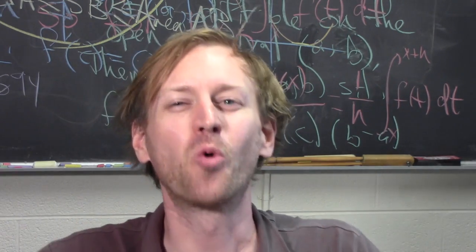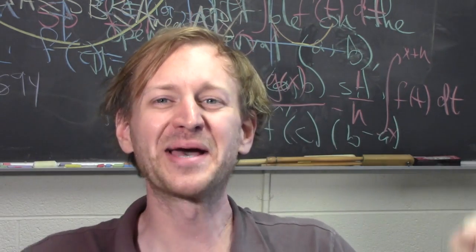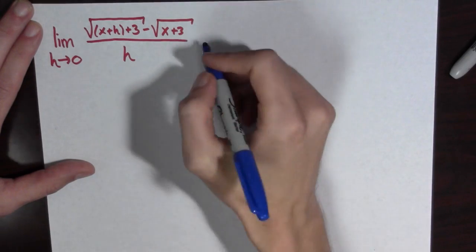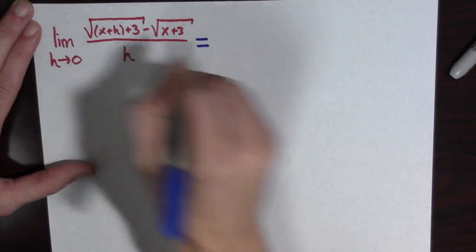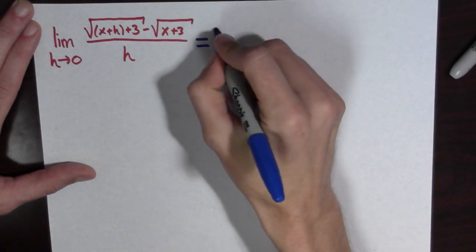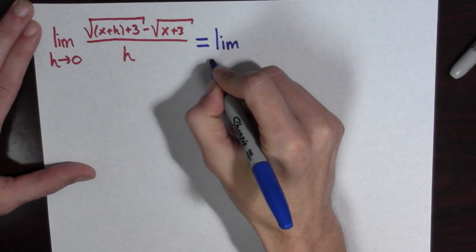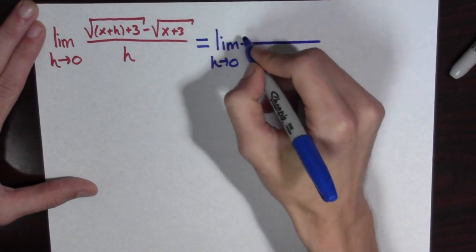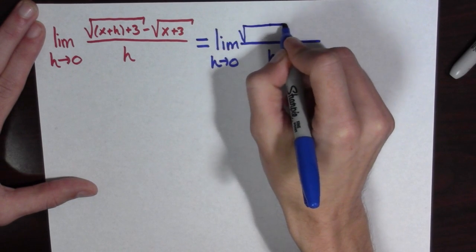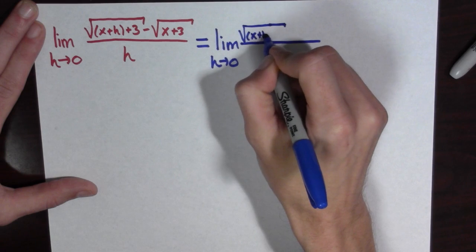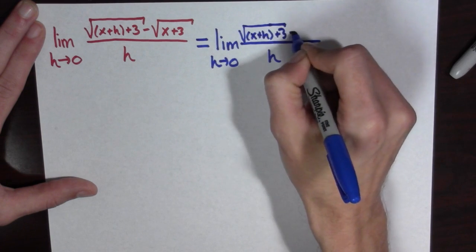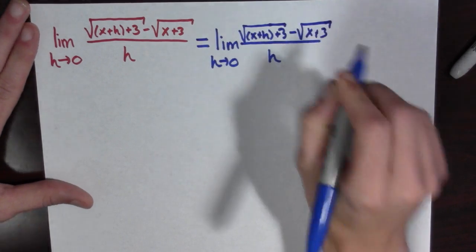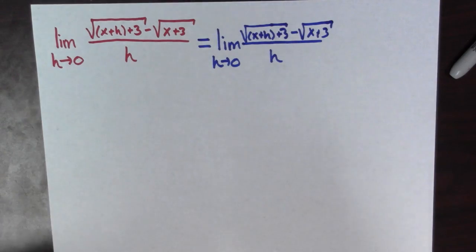At this point, we need to use a trick. We need to multiply by the conjugate. We're going to multiply by the conjugate of the numerator over itself. So this is equal to the limit as h goes to 0 of something over h, which is the square root of x plus h plus 3 minus the square root of x plus 3. And now, we're going to multiply by the conjugate over itself.